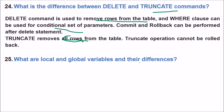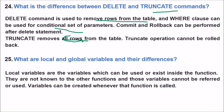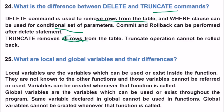What are local and global variables and their differences? Local variables exist only inside a function and are not accessible by other functions; they are created when the function is called. Global variables exist throughout the entire program and can be used by any part of it, though some global variables may have access restrictions. Global variables are not created when a function is called — they already exist.